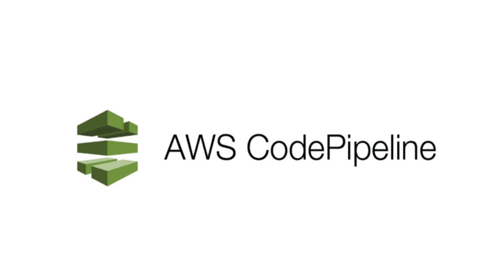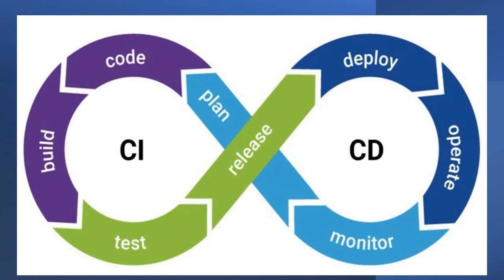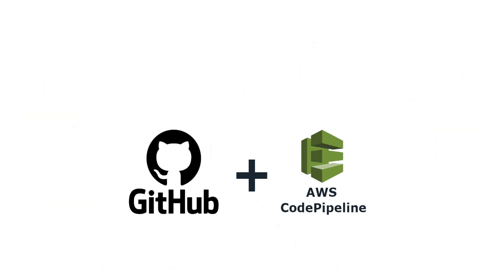I will give a short brief of CodePipeline once again. It is a fully managed continuous delivery service that helps you automate your release pipeline for faster and more reliable application infrastructure updates. It will automate your build, test, and deploy phases of your release process every time there is a code change based on the release model you define. You pay only for what you use — there are no upfront fees or long-term commitments.